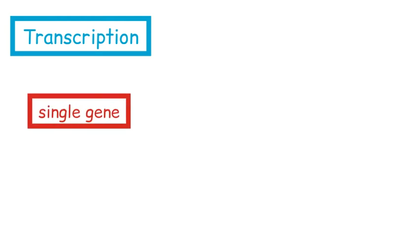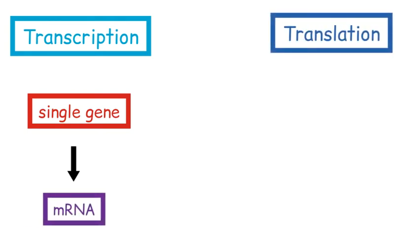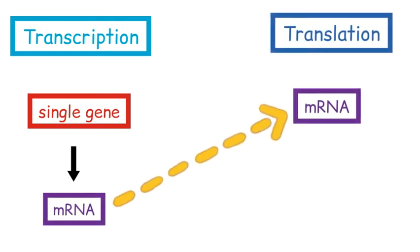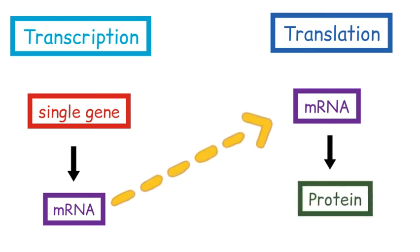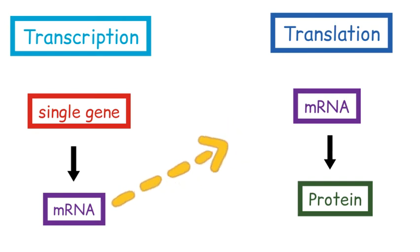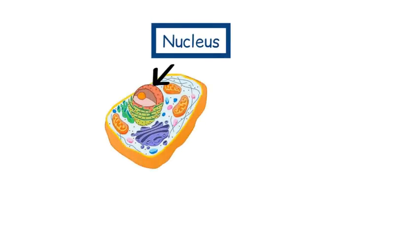Transcription is the process of taking a single gene of DNA and copying it into a structure called mRNA. And translation is the process of taking this mRNA strand and using it to produce a protein. Before we go through the details, we need to look at why we actually need these two steps. Inside almost every cell is a nucleus that contains all the genetic material of that cell in the form of DNA.